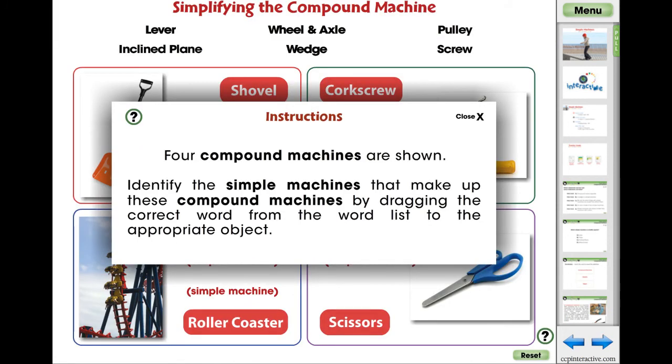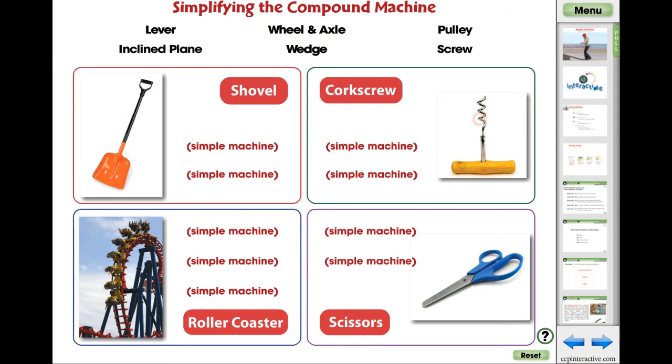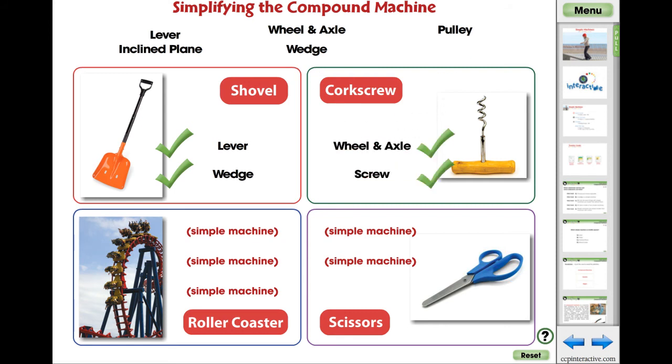The Simplifying the Compound Machine activity is an engaging app to support the comprehension of the content in the reading passage. Students determine the simple machines that make up the provided compound machines by dragging the words from the list to the matching object.